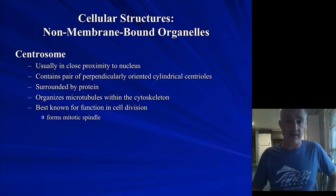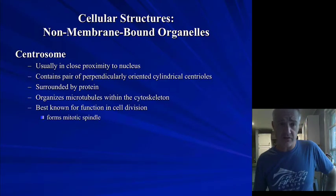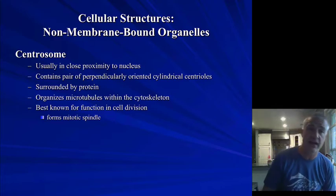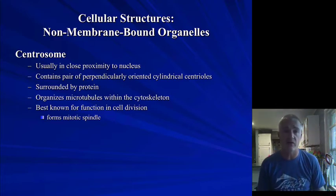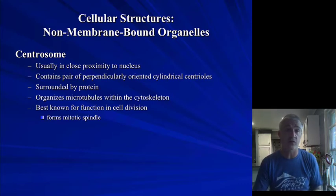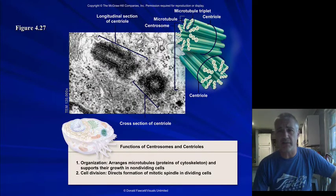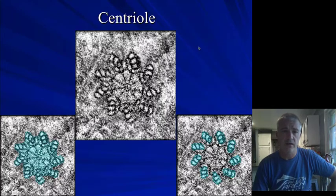The centrosome is a structure that is particularly important during cell division. These help form what are called mitotic spindles, which help organize and move the chromosomes during cell division so that we get an actual set of chromosomes in each new daughter cell. They kind of look like pasta — a little rigatoni type of thing — and you can see those microtubules that make them up.